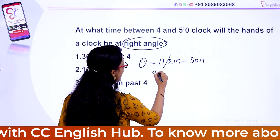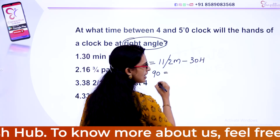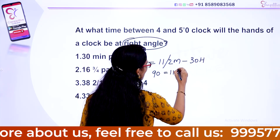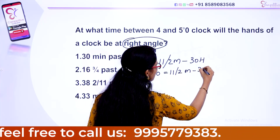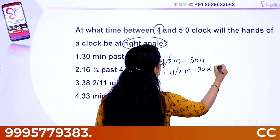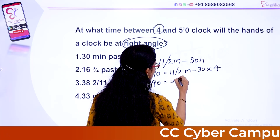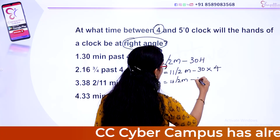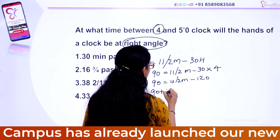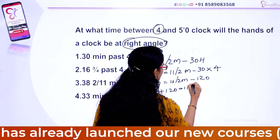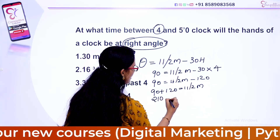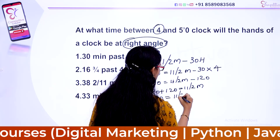Right angle is 90. So, 90 is equal to 11 divided by 2m minus 120. That becomes 90 plus 120, which is equal to 11 divided by 2m. We get 210 is equal to 11 divided by 2m.